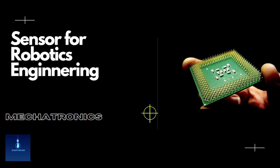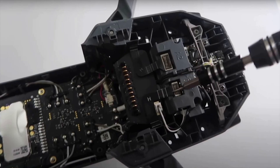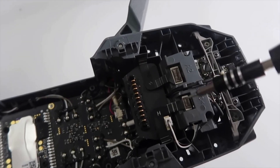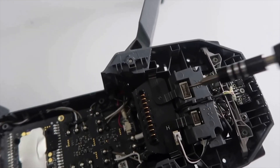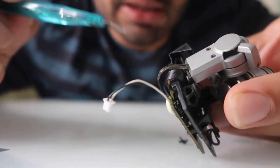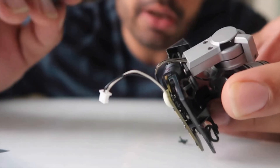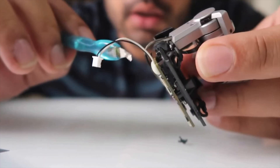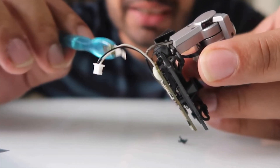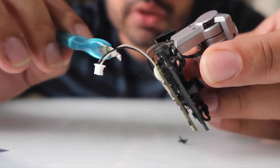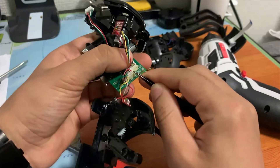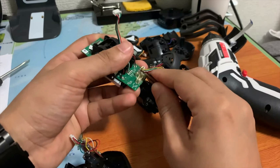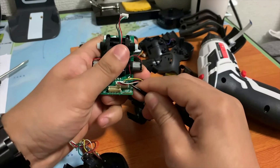In the broadest definition, a sensor is a device, module, machine, or subsystem whose purpose is to detect events or changes in its environment and send the information to other electronics, frequently a computer processor. A sensor is always used with other electronics.